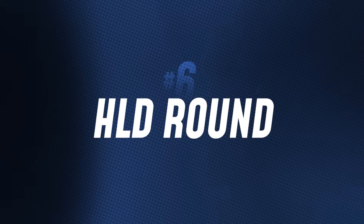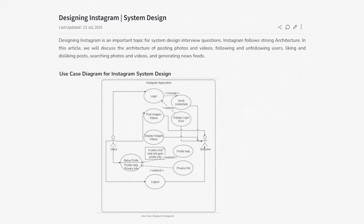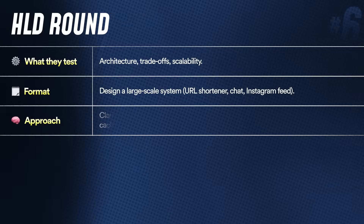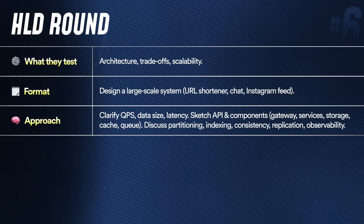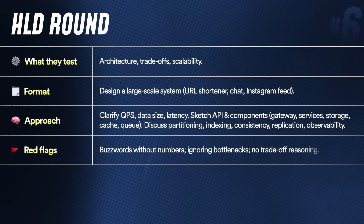The sixth type is the HLD round — High-Level Design — which tests your architectural design thinking and trade-offs. Classic problems include designing a URL shortener, a chat system, or an Instagram feed. The standard flow: first establish functional and non-functional requirements and QPS, then draw the core APIs and components, model your data and choose databases, build and connect the blocks, and then discuss fault tolerance — what if something goes wrong or more pressure comes — covering retries, replication, observability, logging, and metrics. Buzzwords without numbers, ignoring bottlenecks, and bad designs are red flags.